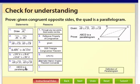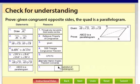And then our last step, ABCD is a parallelogram, definition of parallelogram. We proved that both pairs of opposite sides are parallel, and now we can say it's a parallelogram.